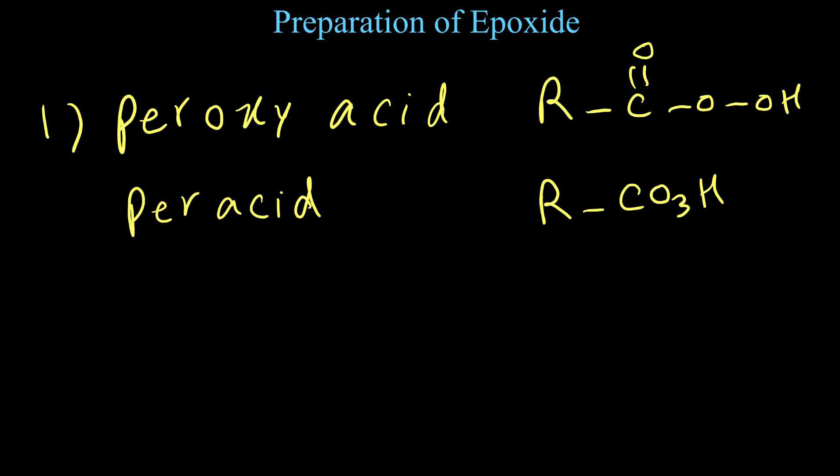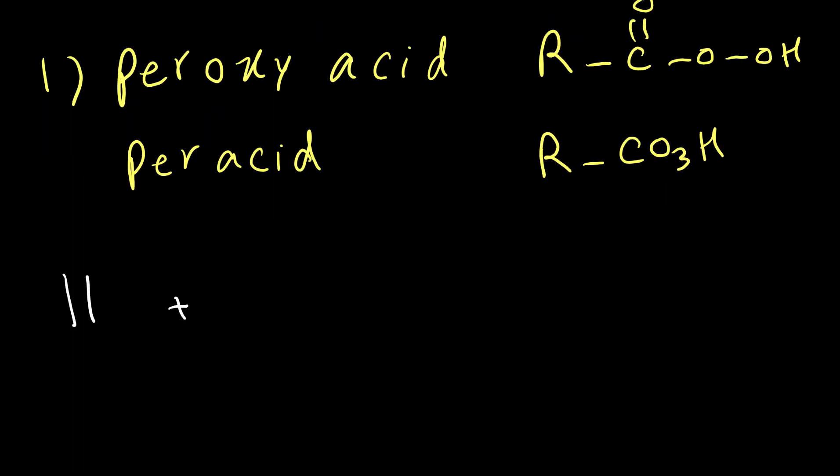Or sometimes we just show it by RCO3H. If we use a peroxy acid and react it with the alkene we have an epoxide ring, so alkene plus any type of peroxy acid can give us epoxide.